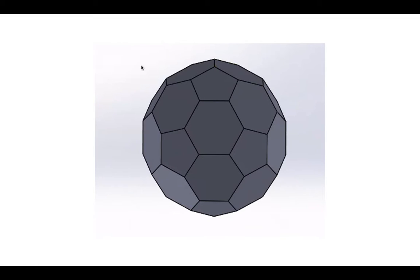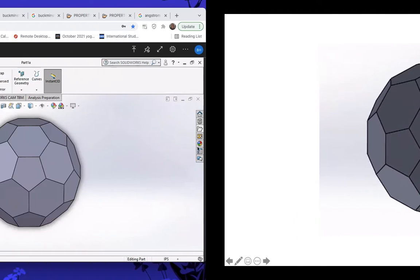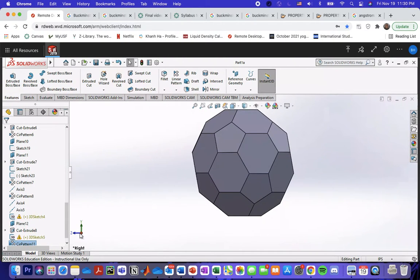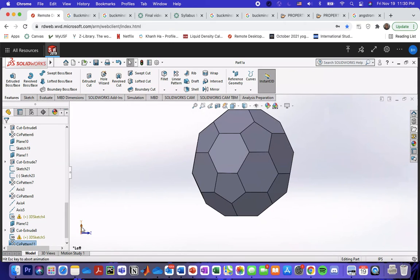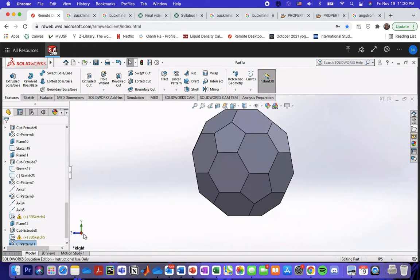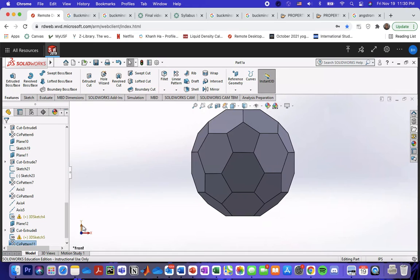This is the 3D model that I made to illustrate the structure of C60. It's not the best 3D model, but it looks like a soccer ball.